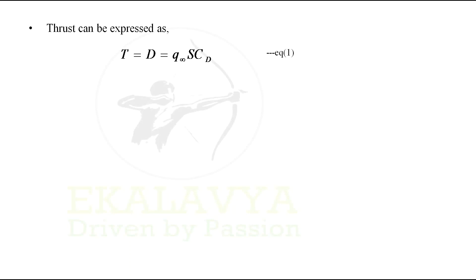Thrust can be expressed as thrust equals drag for a level unaccelerated flight condition. Drag can also be expressed as the product of dynamic pressure, wing area, and coefficient of drag. So overall: Thrust = Drag = q∞ × S × CD. Let us denote this as Equation 1.